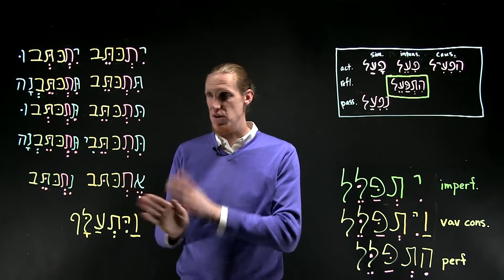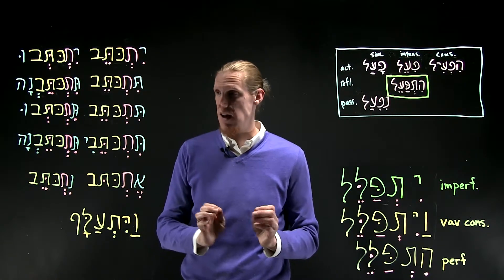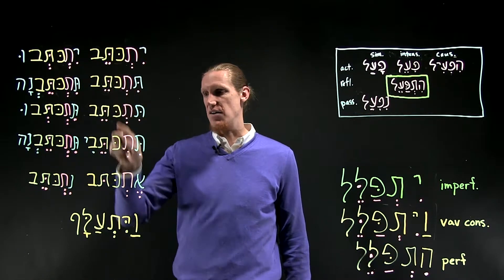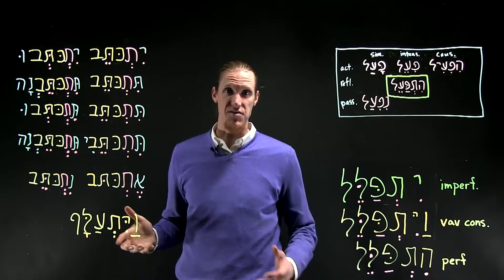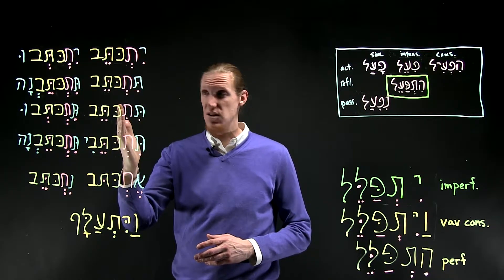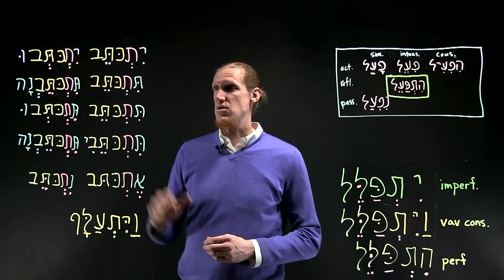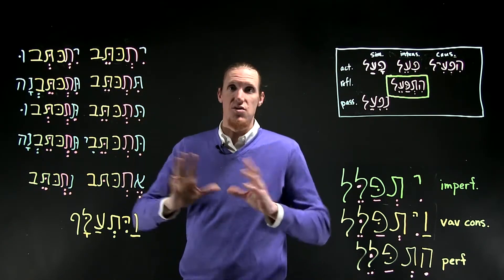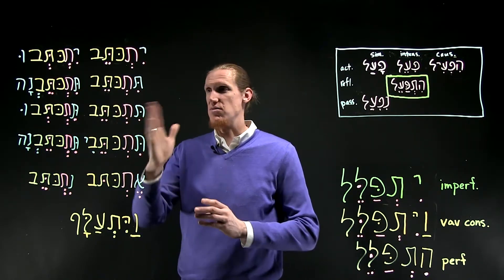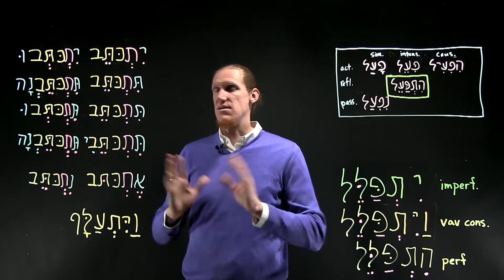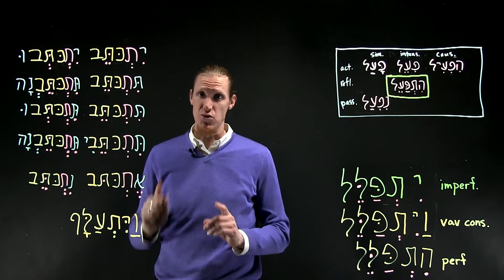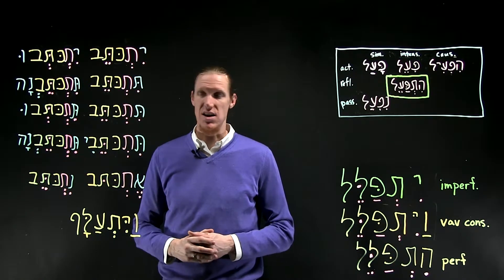Don't confuse the dagesh in the middle root letter, which is a dagesh forte, with the dagesh lene in some of the prefixes and in the kaf here. Kaf is one of the begid kefit letters, and because the shava under the tav closes the syllable, there is a dagesh lene in the kaf. That is just an accident of the way the letter appears there in relation to the shava — it has nothing to do with the root. The dagesh forte is the root sign; that's the visual sign of the hitpa'el, one of them.